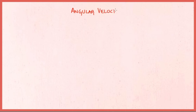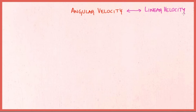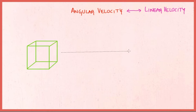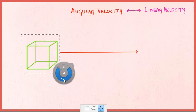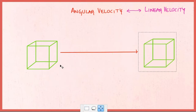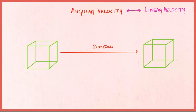In order to understand and remember angular velocity better, we should first understand the analogy of linear velocity, which is closely related to angular velocity. Consider a box which moves in a straight line from point A to point B.